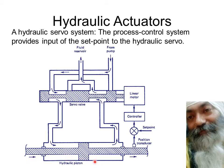The fluid pushes the hydraulic piston from left to right with great force because the piston area is very large. As the piston moves right, the fluid on the other side is compressed and finds its way back through the openings to the fluid reservoir. A position transducer continuously compares the piston's position with the set point, and the moment they match, it sends a signal and the pump turns off.